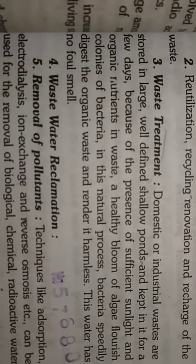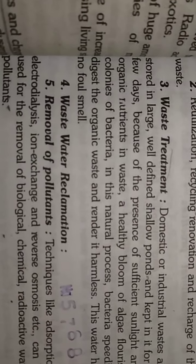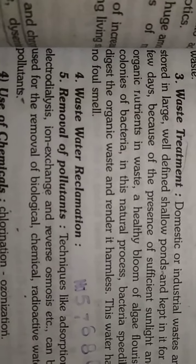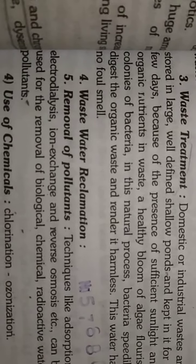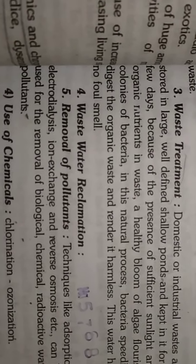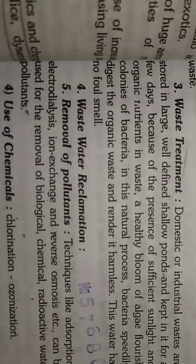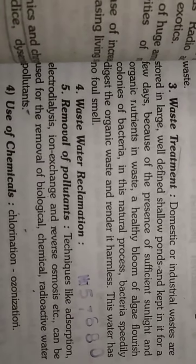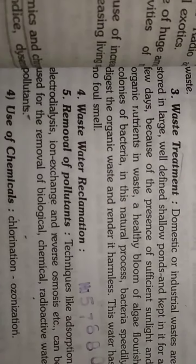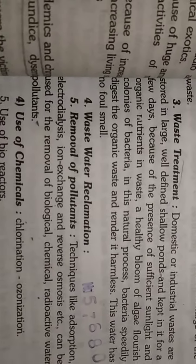Biological, chemical, and radioactive pollutants present in water are also removed by these methods. Chlorination is a common day-to-day method used in municipalities to remove bacteria and algae from water. Ionization is another method employed to clean water pollutants.